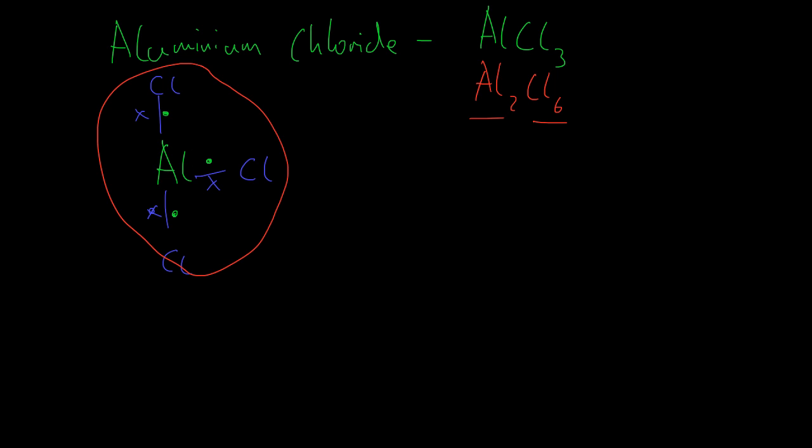If we apply what we know about coordinate bonds, we can see that there is an empty area here for 2 electrons to fill the aluminum's highest occupied orbital. And the chlorines have 3 lone pairs of electrons each. We can assume that the chlorine is going to form a coordinate bond with aluminum, and that's exactly what it does.